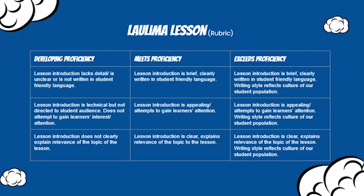The middle criteria, meets proficiency: the lesson introduction is brief, clearly written, and in student-friendly language. And then exceeding proficiency would be the meets proficiency criteria, but a little more. In this particular one, I added that the writing style reflects the culture of our student population. So you can see they've met the criteria for the authentic assignment, but perhaps exceeded it by customizing and tailoring it to our audience.